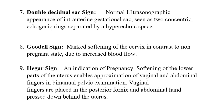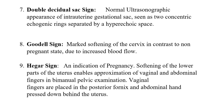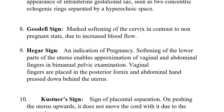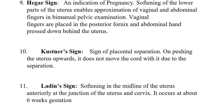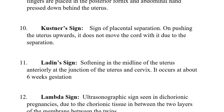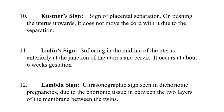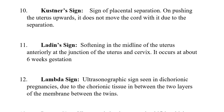In Hegar's sign, the vaginal finger is placed in the posterior fornix and the abdominal hand is pressed down — this approximation of the two fingers, enabled by softening of the lower uterine segment, is called Hegar's sign.